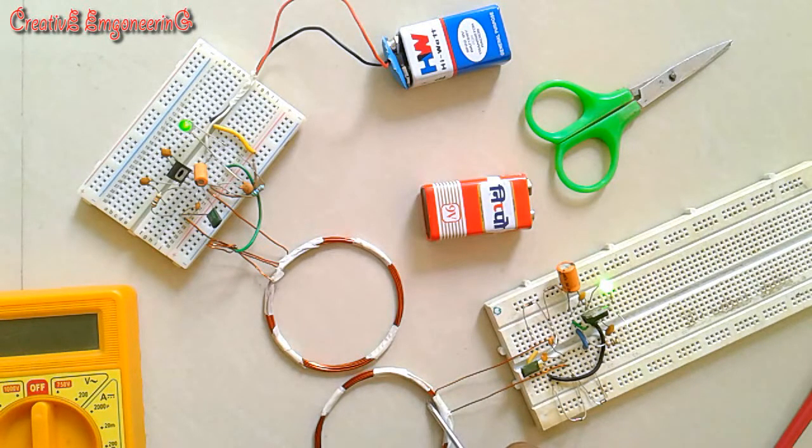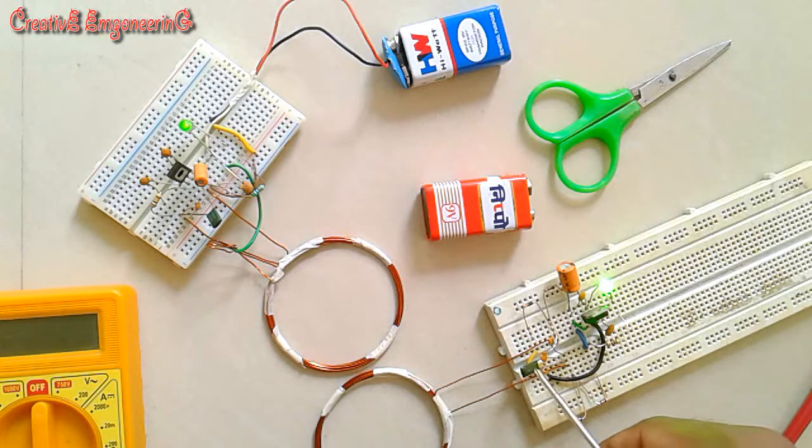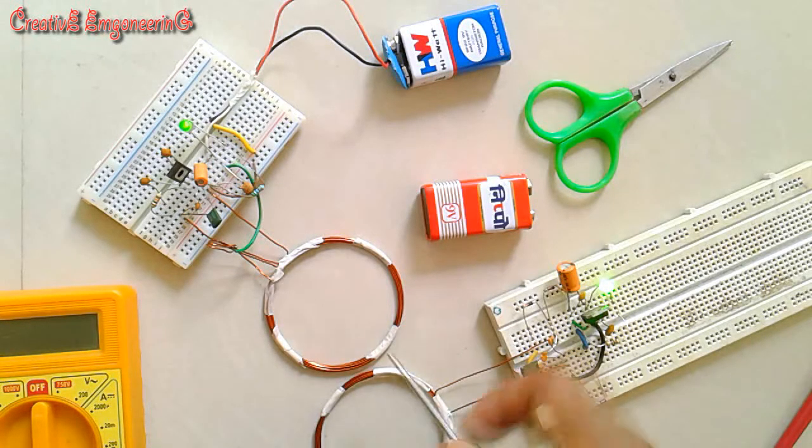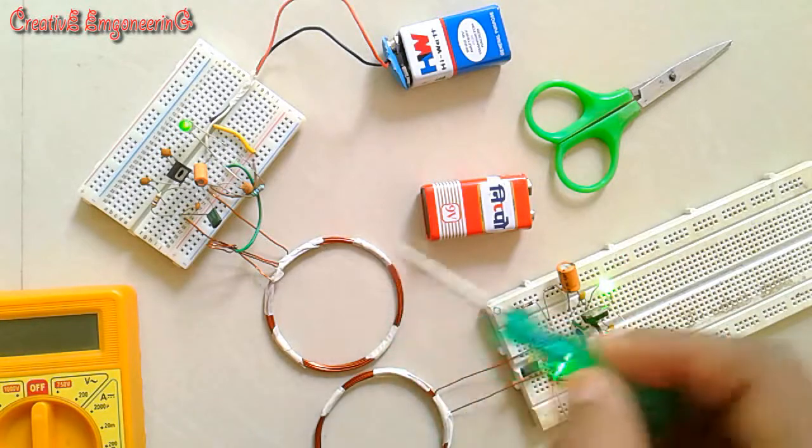This secondary coil consists of one coil and one capacitor. So this is like an LC circuit. The frequency of this LC circuit is tuned to the frequency of this transmitter coil.